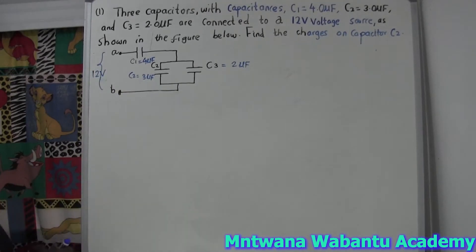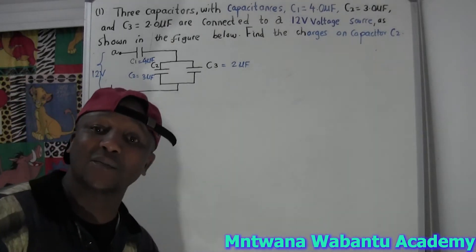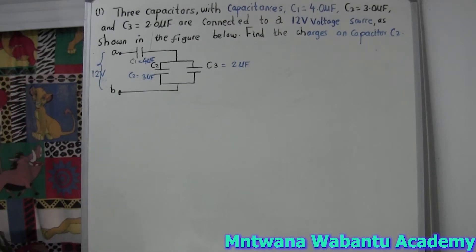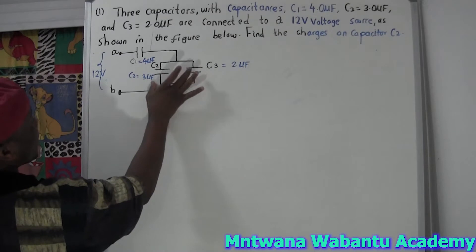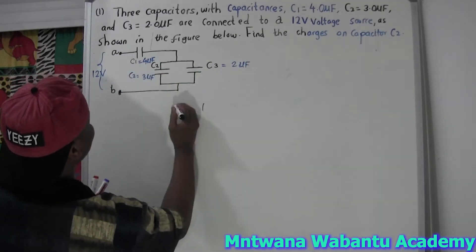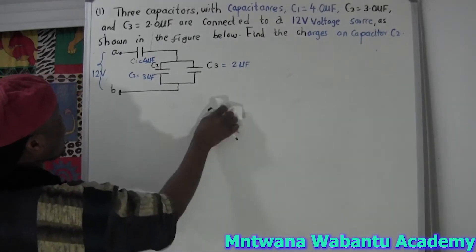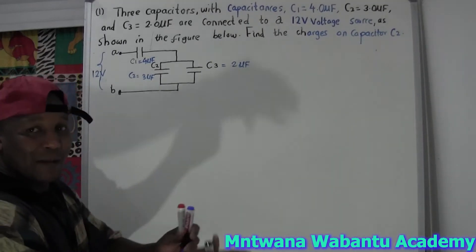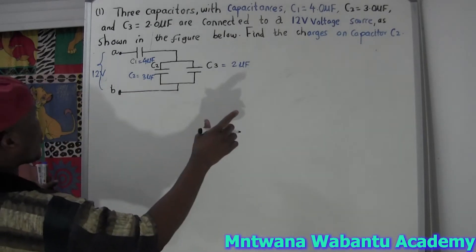We want to find the charge on capacitor C2. First, let me break this down. I can see that C2 and C3 are parallel to each other. Whenever capacitors are in parallel, you add them together.